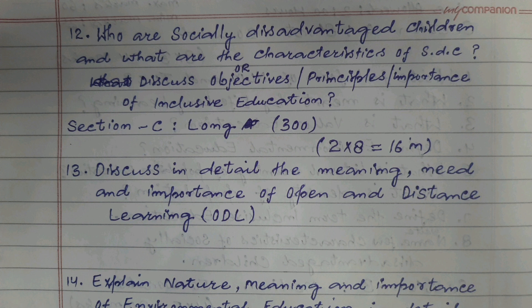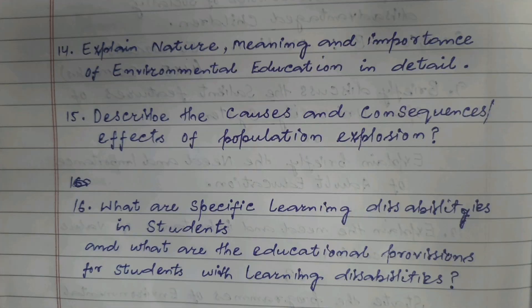Section C — Long Answer Type Questions, to be answered in about 300 words. 2 × 8 = 16 marks. Question 13: Discuss in detail the meaning, need and importance of open and distance learning. Question 14: Explain the nature, meaning and importance of environmental education in detail. Question 15: Describe the causes and consequences of population explosion. Question 16: What are specific learning disabilities in students and what are the educational provisions for students with learning disabilities?